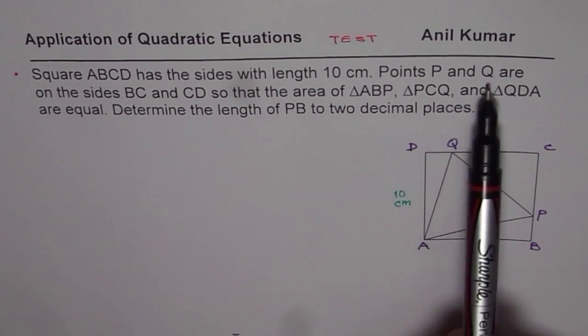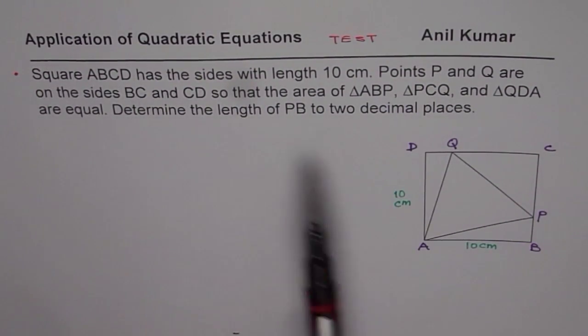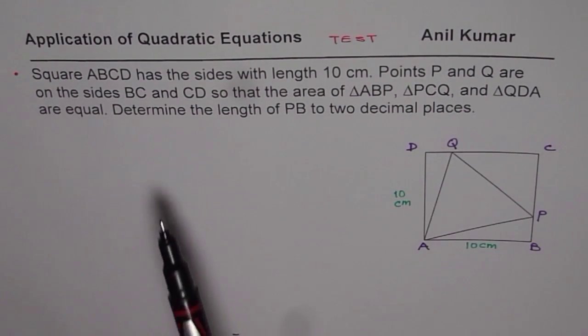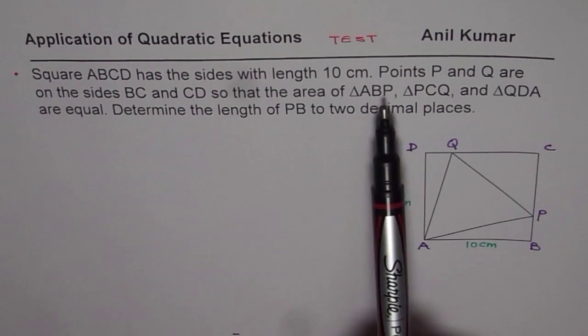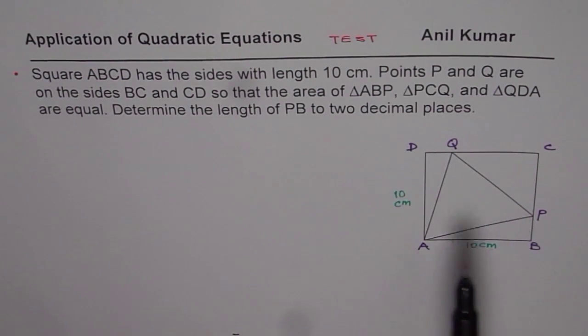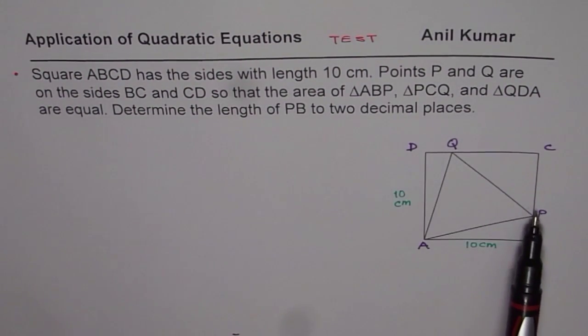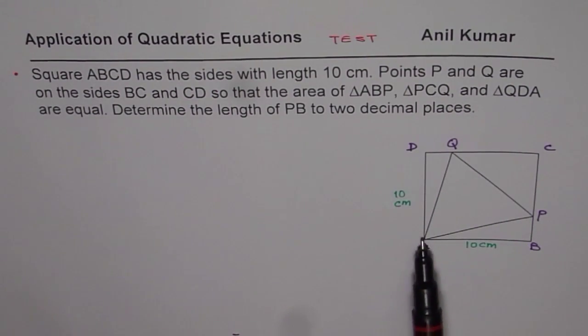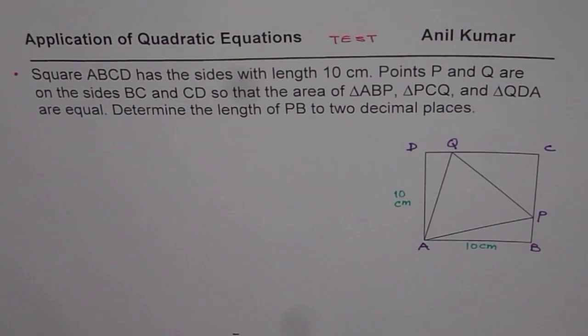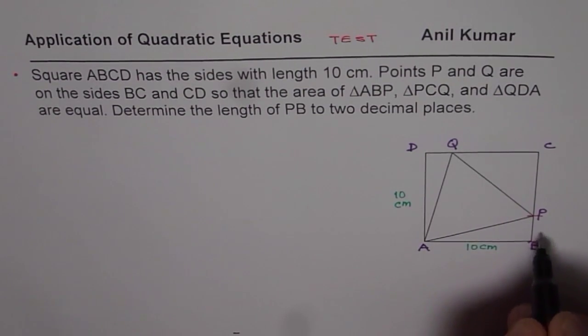Points P and Q are on the sides BC and CD, so these are your two points, so that the area of triangle ABP, triangle PCQ, and triangle QDA are equal. Determine the length of PB to two decimal places. So you need to find this length of PB.